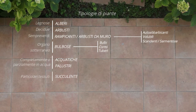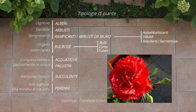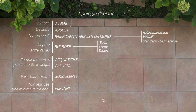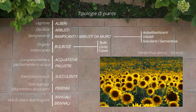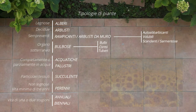Arriviamo così al gruppo delle piante perenni, con il quale si intendono quelle non legnose, che vivono almeno tre anni e fioriscono annualmente raggiunta la maturità. Infine abbiamo le annuali o biennali, che crescono, fioriscono, producono semi e muorono in una o due stagioni.